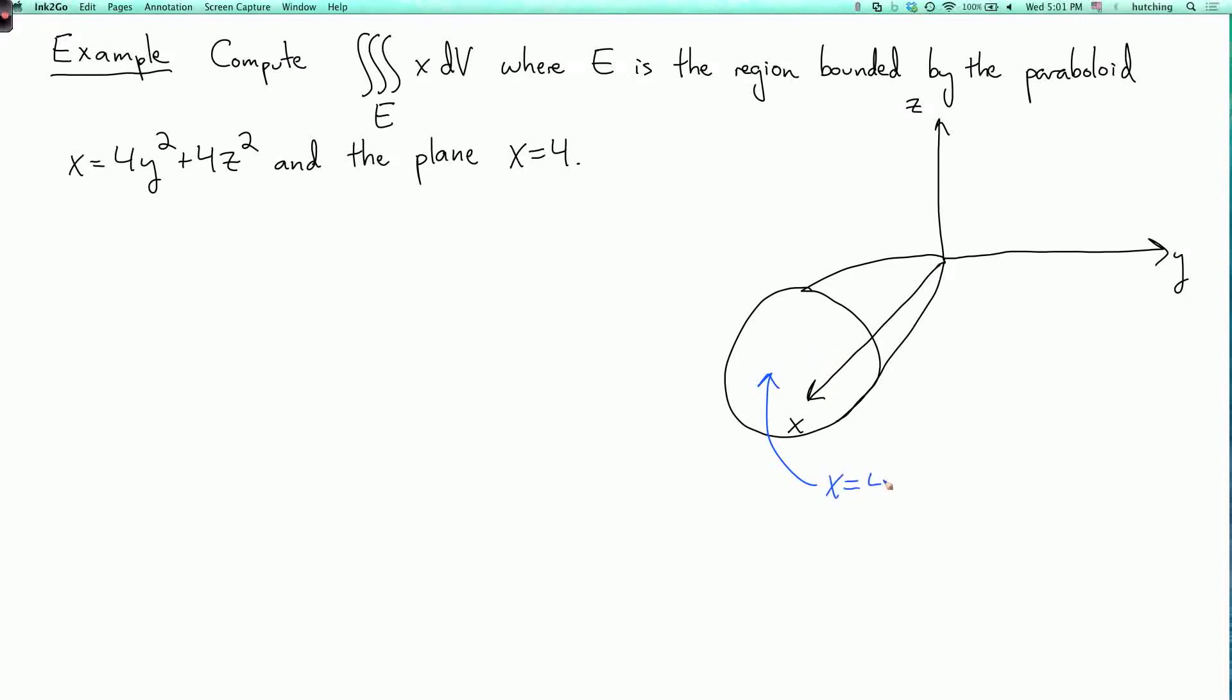And this surface here is the paraboloid x equals 4y squared plus 4z squared. Now, we could integrate in different orders. Which order do you think is going to be the easiest to do? Well, the answer is going to be that it's easiest to integrate over x last, and then, well you'll see how this works, so watch.